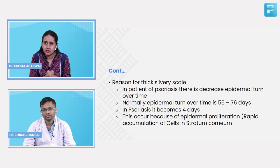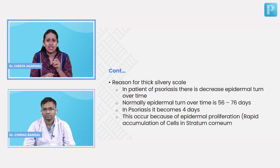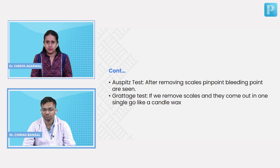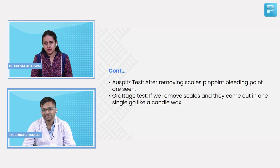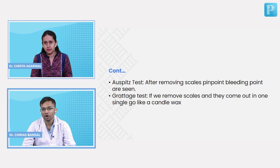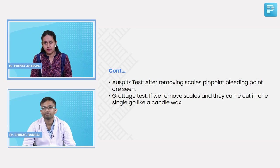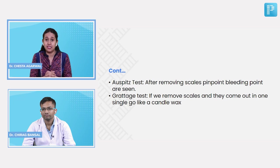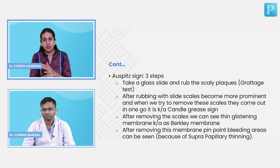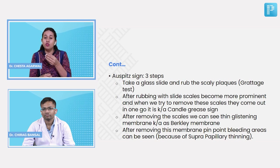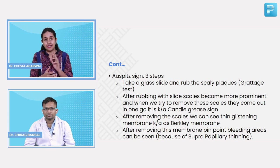How do you perform the Auspitz test? When we remove the scales and see pinpoint bleeding points, that shows Auspitz sign is positive. For the grattage test, if the scales are removed in one go like candle wax, that is grattage sign positive. Both are components of a single test — the Auspitz test — which is a three-step procedure.